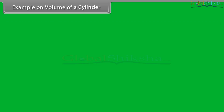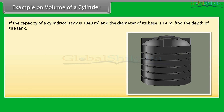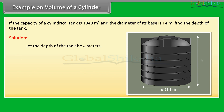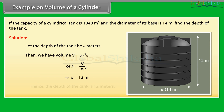Example of volume of a cylinder: If the capacity of a cylindrical tank is 1848 meter cube and the diameter of its base is 14 meters, find the depth of the tank. Let the depth of the tank be h meters. Then we have volume V equals pi into r square into h. Or h equals V upon pi into r square, which implies that h equals 12 meters. Hence the depth of the tank is 12 meters.